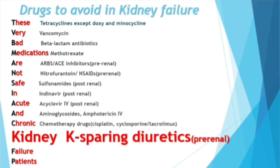'K' is for potassium-sparing diuretics. All diuretics lead to decreased blood volume and renal blood flow, causing pre-renal failure.